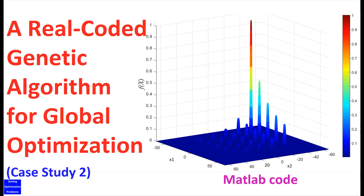Hello everyone. I have successfully developed a real-coded genetic algorithm for unconstrained global optimization problems. This genetic algorithm has an innovative mechanism that can automatically restart the search process if the genetic algorithm gets stuck in local optima. Therefore, this genetic algorithm can guarantee to find the global optimal solution with a very short computing time.